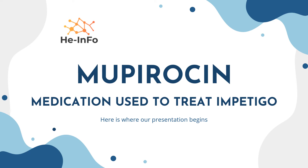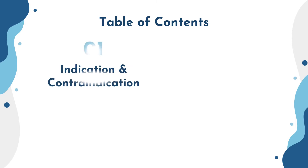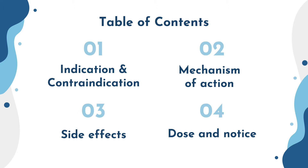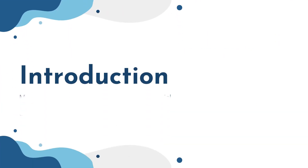Hello everyone, welcome to the Health Info channel. In today's video we will talk about mupirocin, an antibiotic used to treat bacterial infections. We will cover general information including the indication, contraindication, mechanism of action, side effects, dosage, and notes for use in pregnant and lactating women.